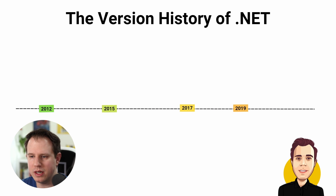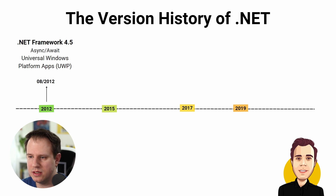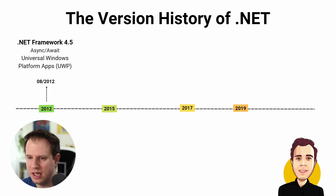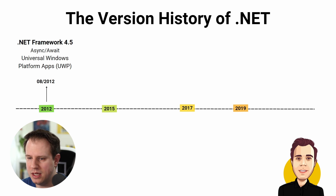The .NET Framework 4.5 was released on August 15th, 2012, together with Visual Studio 2012. It brought built-in support for async/await to handle asynchronous operations. On the technology side, Universal Windows Platform apps (UWP) were introduced, allowing targeting of multiple devices with a single codebase.